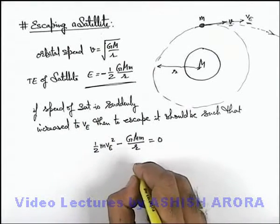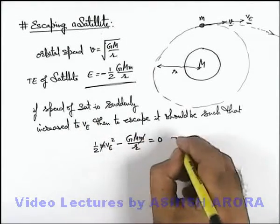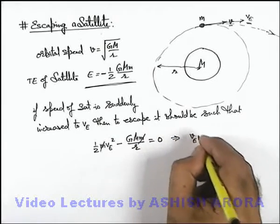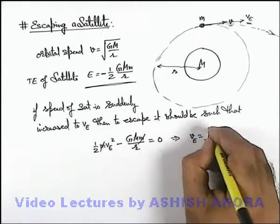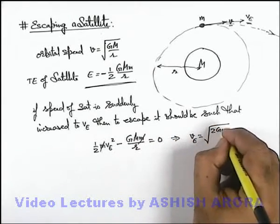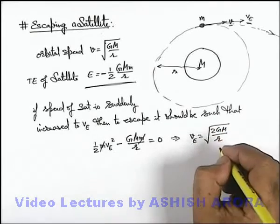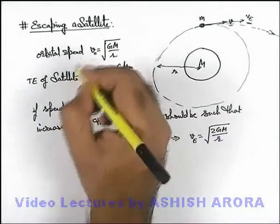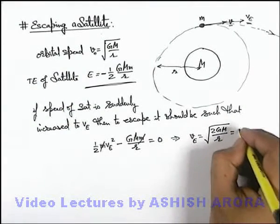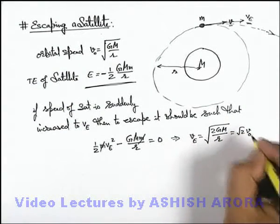And from here we can find out the value of v_e to be - if we calculate this value of v_e, you can see it'll be root of 2GM over r. And you can see if this was the orbital speed v_o, this'll be root 2 times the orbital speed v_o.